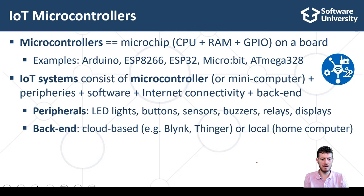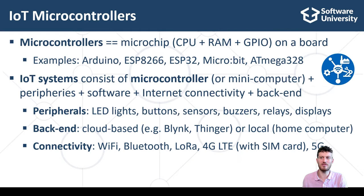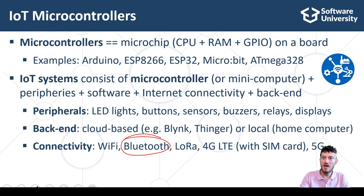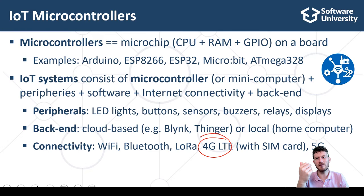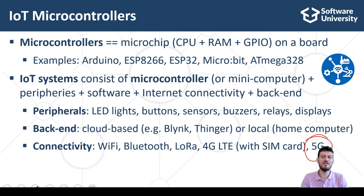IoT devices are network-connected by definition, and many connectivity technologies and protocols are available. Wi-Fi is used for home devices where Wi-Fi is always available and power consumption is not critical. Bluetooth is used for low-distance connections to other devices. LoRa is used for low-power, wide-range, low-throughput network connectivity. 4G LTE and 5G networks with SIM cards provide internet connectivity powered by mobile operators, with 5G offering lower power consumption.